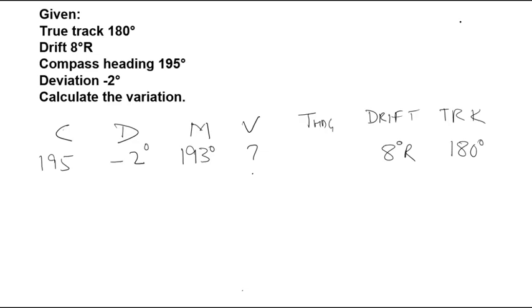Now using CDM, 195 minus 2 degrees deviation will give us 193 degrees. This is our magnetic heading and we can use the formula heading plus minus drift is equal to track. Now, heading we don't have. So, this is what we need to find.